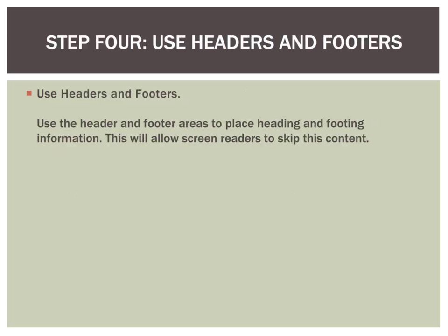The third step in creating an accessible Word document is to use the appropriate navigation tools. If you've already labeled your headings with heading styles, that takes care of the majority of navigation for screen readers and other accessibility tools. However, there are three other items requiring the correct Word tool: tables of contents, indexes, and notation tools such as footnotes and endnotes. These tools create a working and easily updatable navigation system. Also remember to use page numbers in the header or footer so that these navigation elements work correctly.